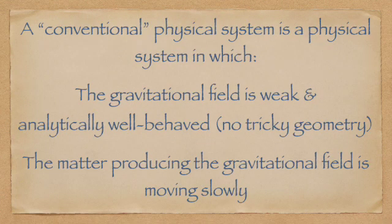To simplify the presentation moving forward, I'm going to introduce the term conventional physical system. For this presentation, a conventional physical system is one in which the gravitational field is weak and analytically well-behaved, and the matter generating the gravitational field is moving slowly relative to the speed of light.